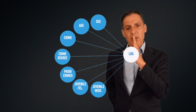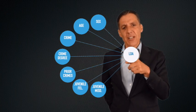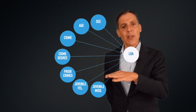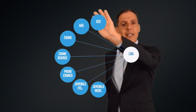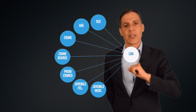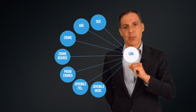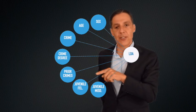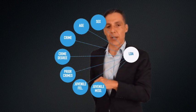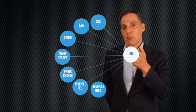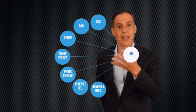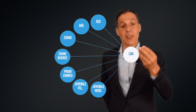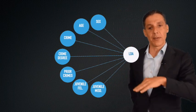Then we said, do we really need all seven of those? What if I only had six — what if I didn't know the sex, or I didn't know the age, or I didn't know the prior crimes? And then we thought, what if you only need five? What if you only need four pieces of data? What if you only need three, two, or one?